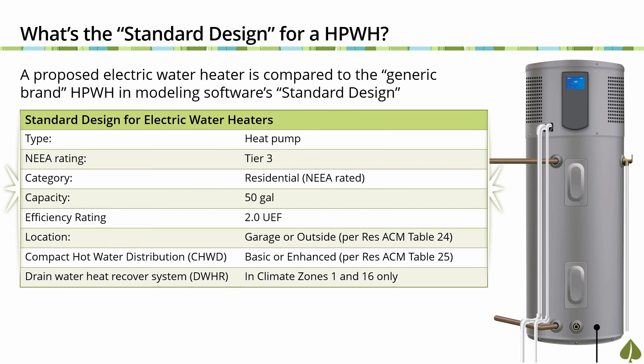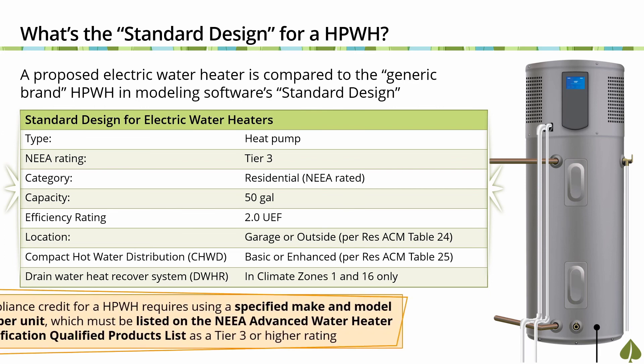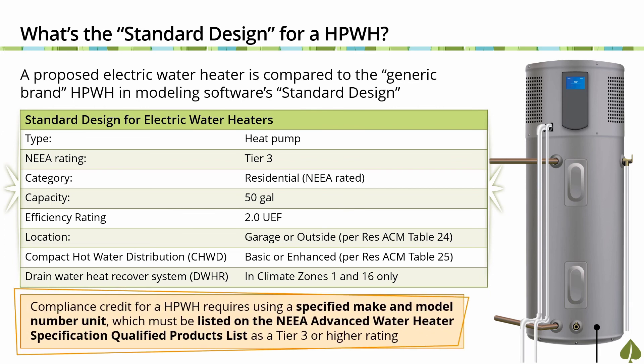Refer to Table 25 in Chapter 2 of the Residential ACM Reference Manual. When the project is located in climate zones 1 or 16, the standard design for a heat pump water heater also includes a drain water heat recovery, or DWHR, system. To receive a compliance credit for a heat pump water heater requires using a specific make and model number unit which must be listed in the NEA Advanced Water Heater Specification list of qualified products as a Tier 3 or higher rating. Understanding what sets the standard design for a DHW system is important for making recommendations to meet or exceed the energy code requirements.